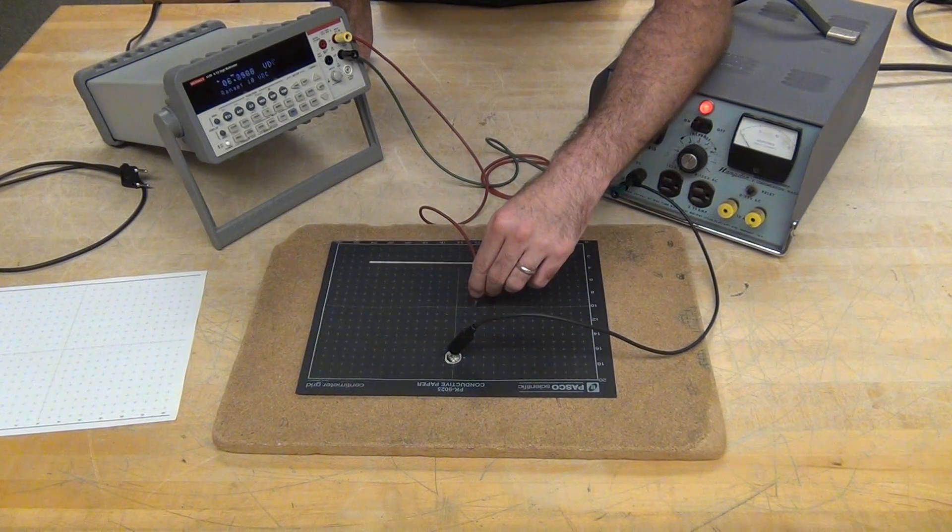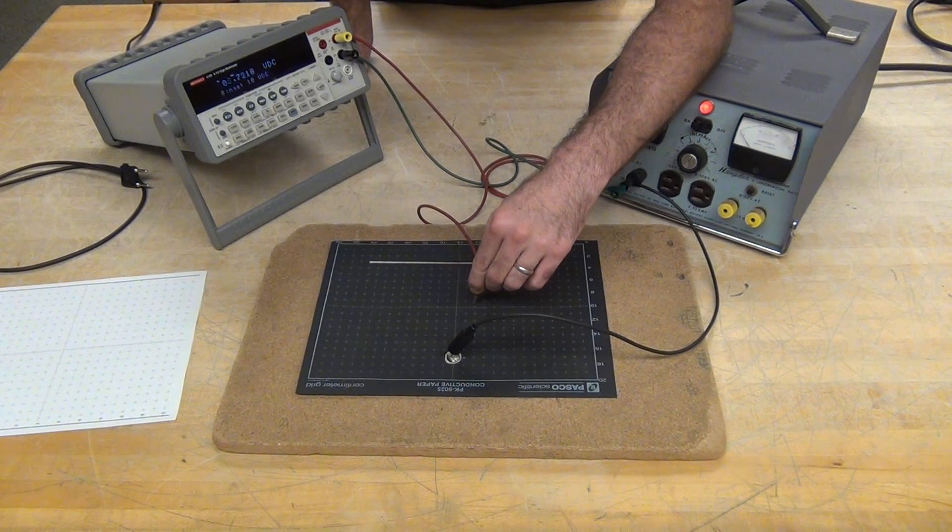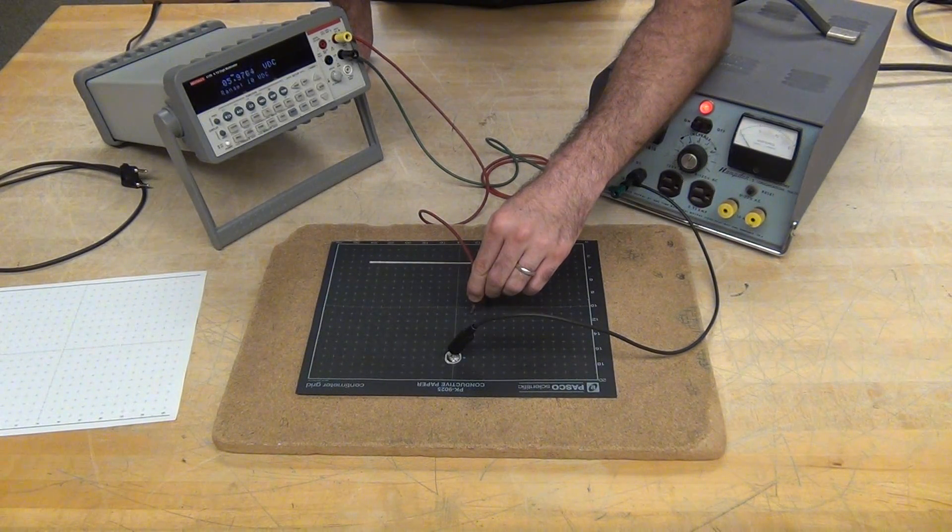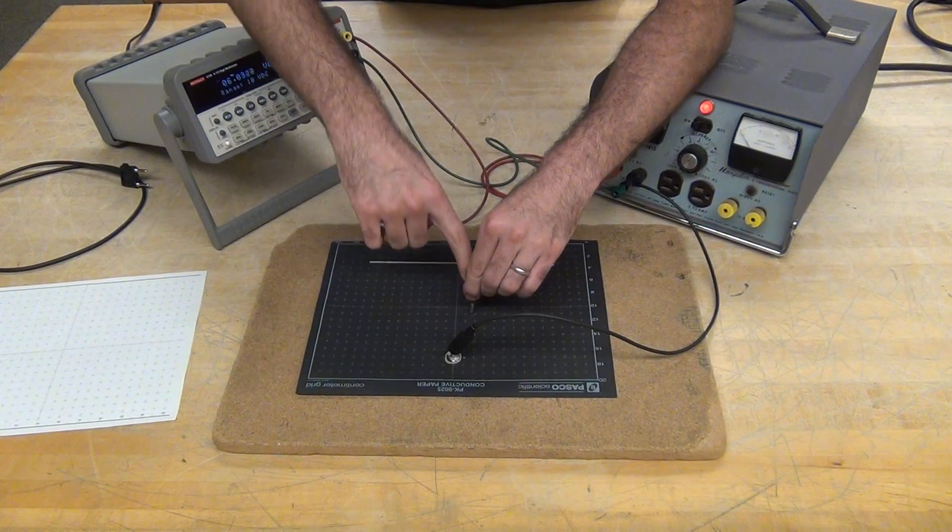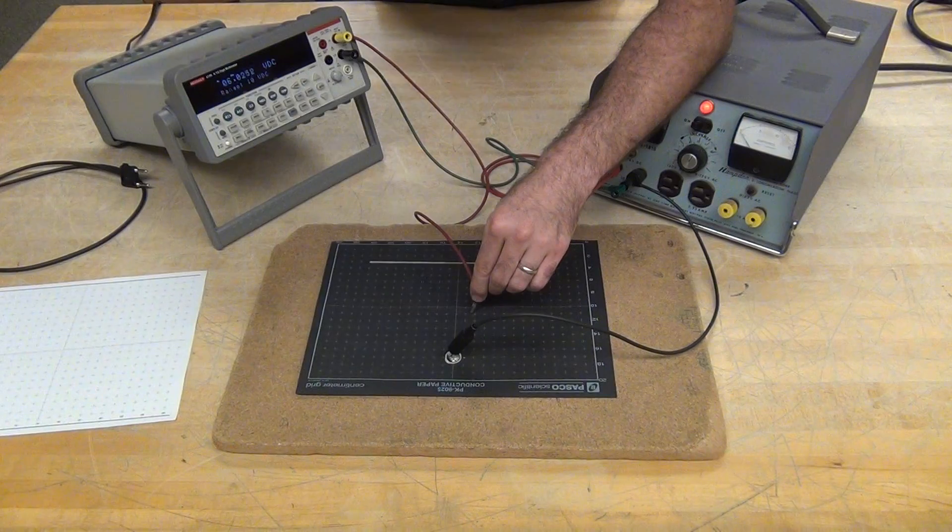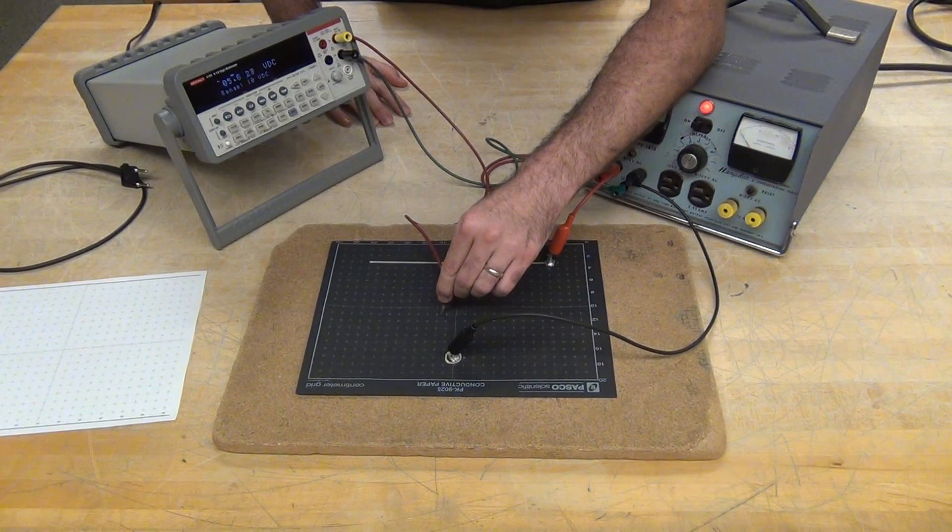Then I would look for a 6 volt point, moving my probe around until I find 6 volts. So I'm measuring a potential difference between this point and this point as currently 6.02 volts. And then I would find another one.